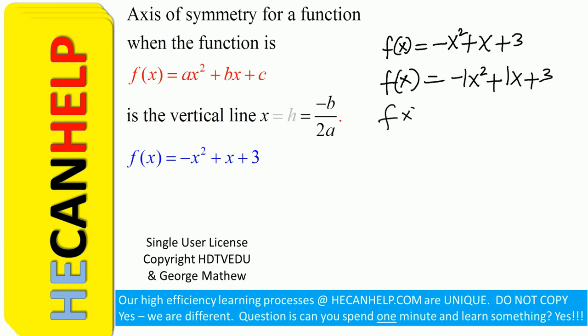Compare that with f(x) = ax² + bx + c, and immediately you see that a = -1, b = 1, and c = 3.